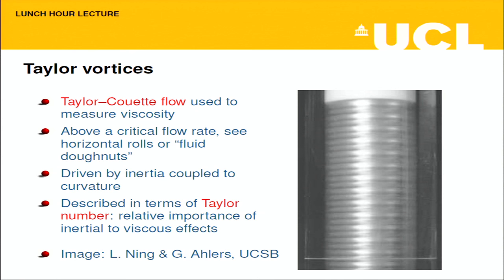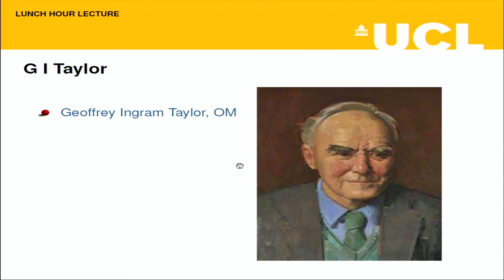Here's another instability: Taylor vortices. What you're seeing is a vertical cylindrical cell with another cylinder inside it, and the inner cylinder is rotating. It's called a Taylor-Couette cell and it's designed to measure the viscosity of the material between the two cylinders — you measure the torque needed to rotate the inner cylinder. Couette designed it to measure the viscosity of air. This version has a slightly fatter gap to show what happens if you flow it too fast. Up to a certain speed everything is uniform, then above that speed these rolls kick in, caused by a coupling between inertia and curvature.